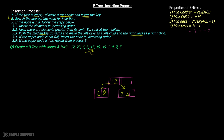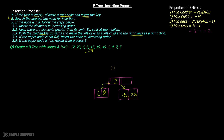Let's insert 15. Since 15 is greater than 12, the root node key value, we go to the right of 12. The node to the right has 23. We insert 15 in proper ascending order, so 15 comes first and 23 shifts over. Now the right child node contains 15 and 23, and 15 is inserted.